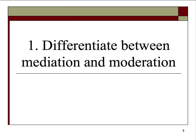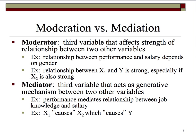Our first objective is to differentiate between mediation and moderation. Moderation is when a third variable affects the strength of the relationship between two other variables. For example, the relationship between performance and salary may depend on gender. If you can ever make a statement like 'is contingent upon,' or 'especially if,' or 'depending upon some third variable,' you're talking about an interaction effect or a moderator effect.